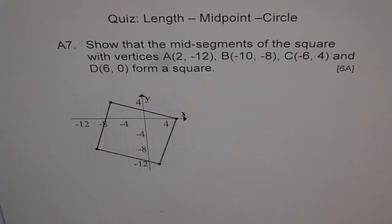A7 is another application problem on length and midpoint. Show that the mid-segments of the square with vertices A, B, C and D form a square.